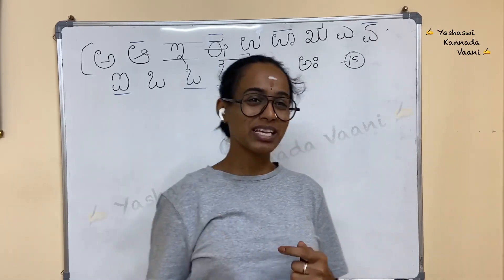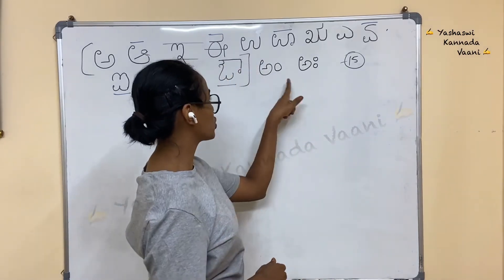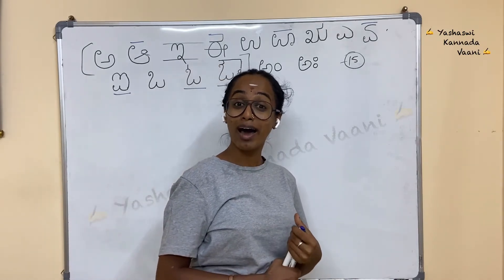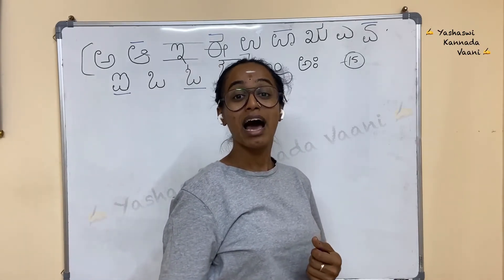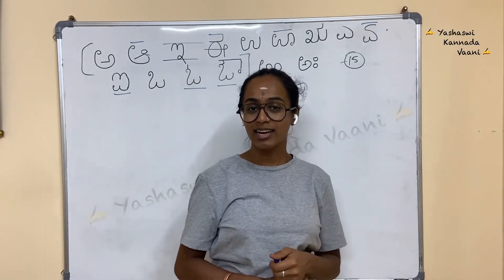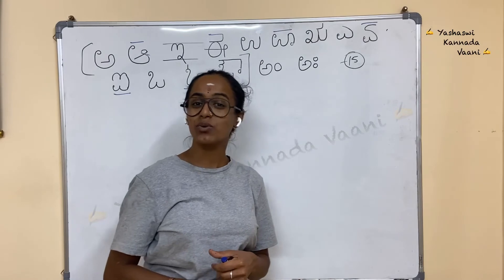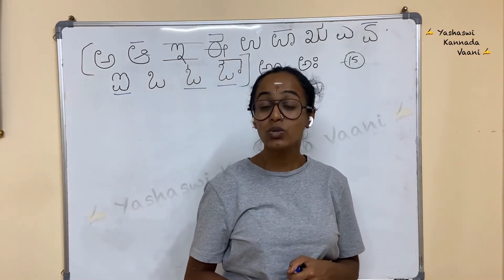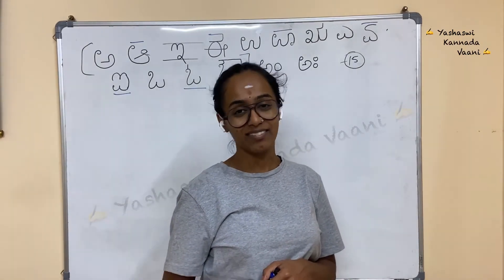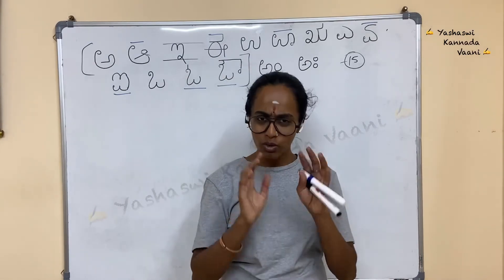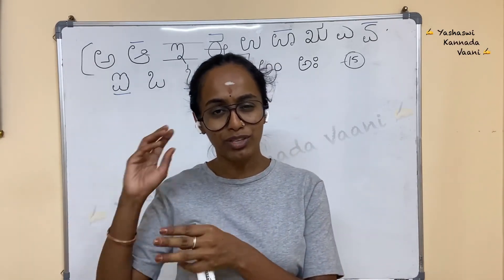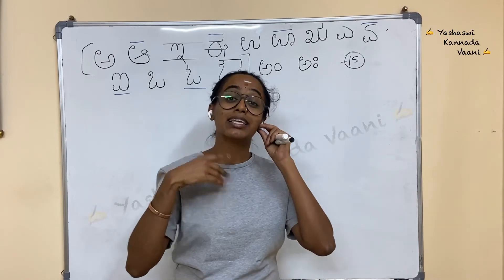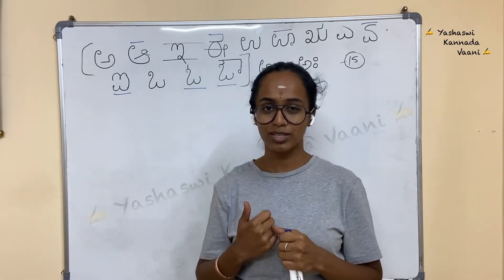Very good. Next, about these two: if it is 1 zero it is called Anuswara. And 2 zeros is called Visarga. Very good — notes will be given at the end of the recording. Don't worry — you can copy down the notes and start practicing.